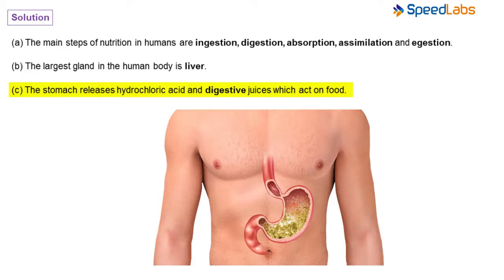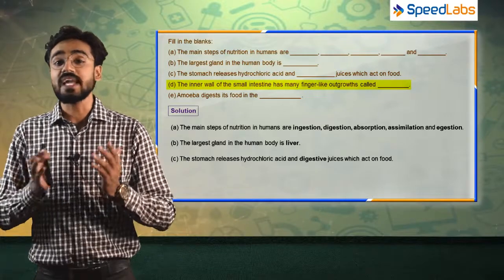The third question asks what the stomach releases. As we know, hydrochloric acid is released in our stomach so that our food can be properly digested. It also releases some juices which are known as digestive juices. So the answer for the third fill in the blank is digestive juices, which act on our food.